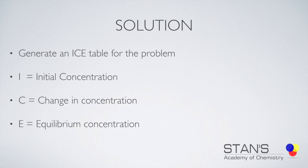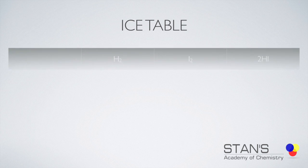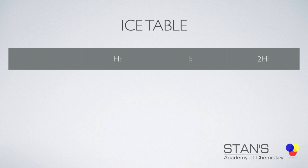This is how the ICE table is going to look. The first row represents the reactants and the products—in this case, hydrogen and iodine changing into hydrogen iodide. Then we will include the initial concentrations. The initial concentration for hydrogen is 0.100 mole per liter; it is the same for iodine too.